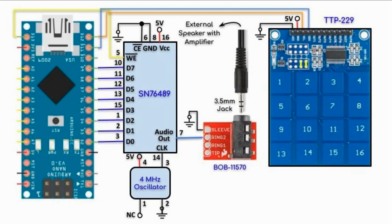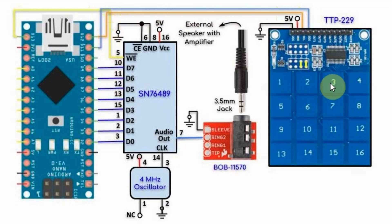This circuit diagram shows the interfacing of the TTP229 16 touch key module with the Arduino. The data line is connected to pin D11 and the clock is connected to pin D12. Touching any of the keys on the module will play a different ringtone.